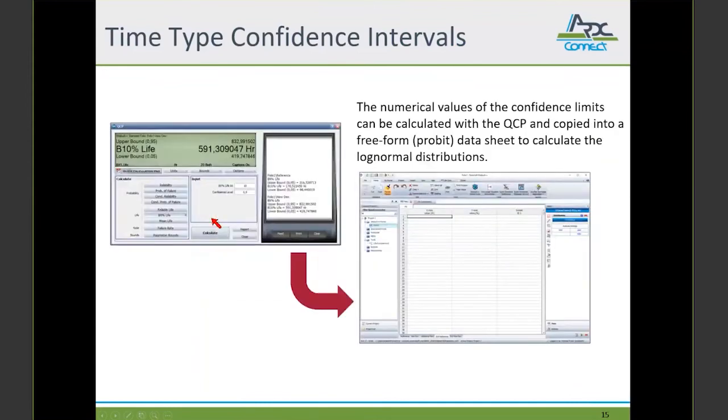So the numerical values of the B10 and the confidence limit can be calculated with the so-called quick calculation. So it's important to choose BX life. Enter 10% for the B10 life. Switch to bounds on two-sided. And enter the confidence level 0.9 and calculate. Then these values appear on this window here. And by copy and paste, they can be transferred to such a freeform Weibull data sheet.